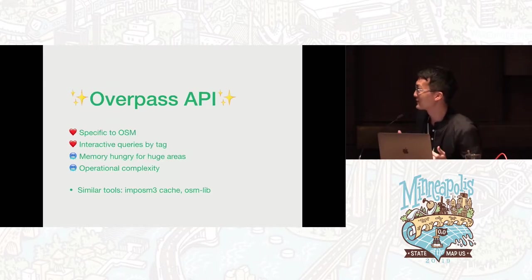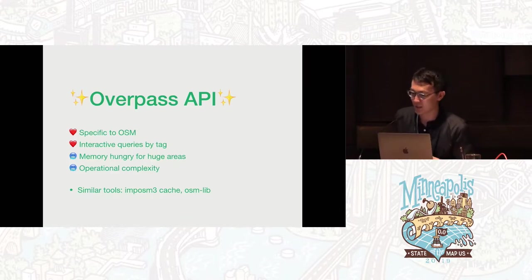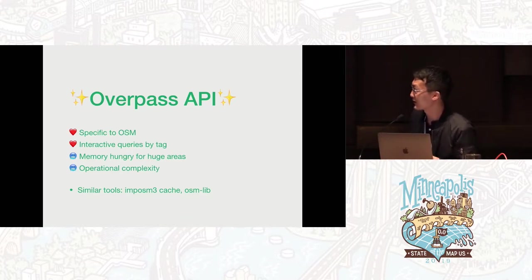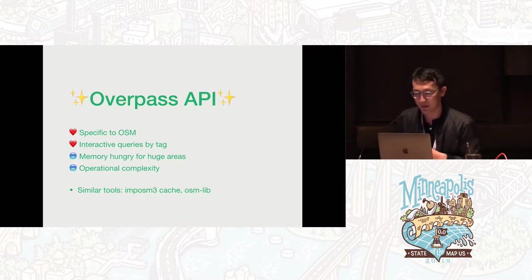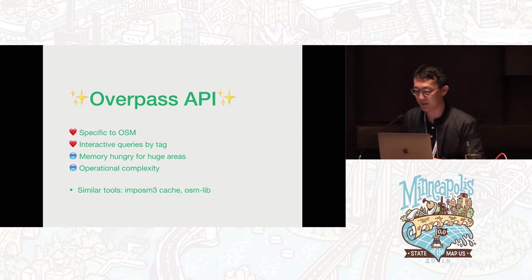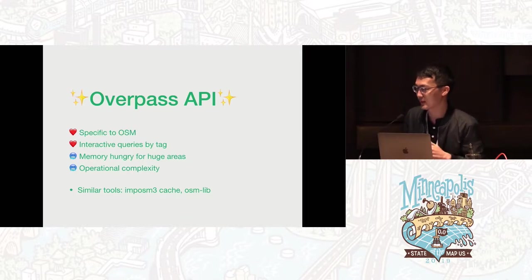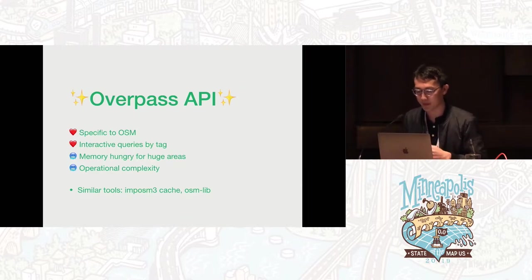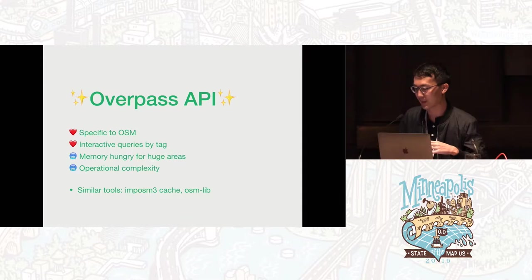There's another really good tool that everyone loves: Overpass. It solves some of those lossy problems in that it's specific to the OSM data model and is really powerful for interactive queries, even through the web with Overpass Turbo. Some limitations I want to address: it's quite memory-hungry for huge areas over about 50 or 100 million nodes, and it has some operational complexity because of all its features — its own language and parser, an interpreter, and a dispatcher process. I'm trying to find something in this design space that is as simple as possible. There are other libraries like OSMlib and Imposm 3's local DB cache for resolving geometries.